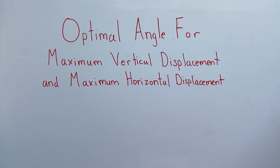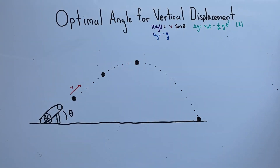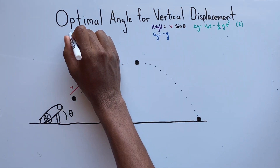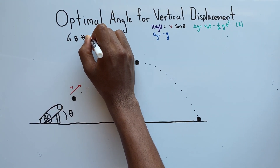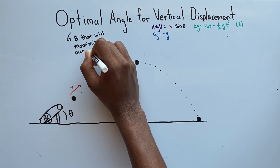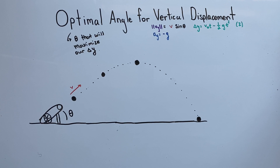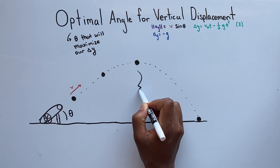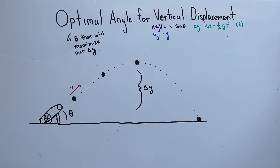In this video we are going to determine the angle an object has to be launched to have a maximum vertical displacement and a maximum horizontal displacement. What we're trying to do is find an angle that will maximize our vertical displacement or height. Looking at our diagram, we see that a cannonball is being launched with a velocity v at an angle theta, and the maximum height is shown in the diagram. Our objective is to find a formula that gives us a relationship between the projectile's launch angle and its maximum height.